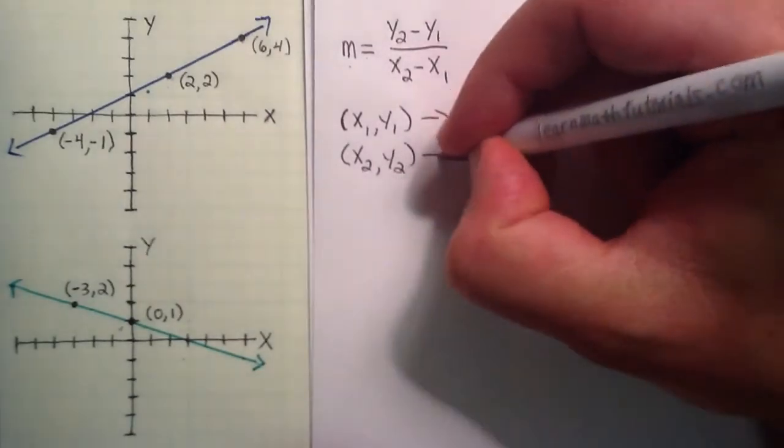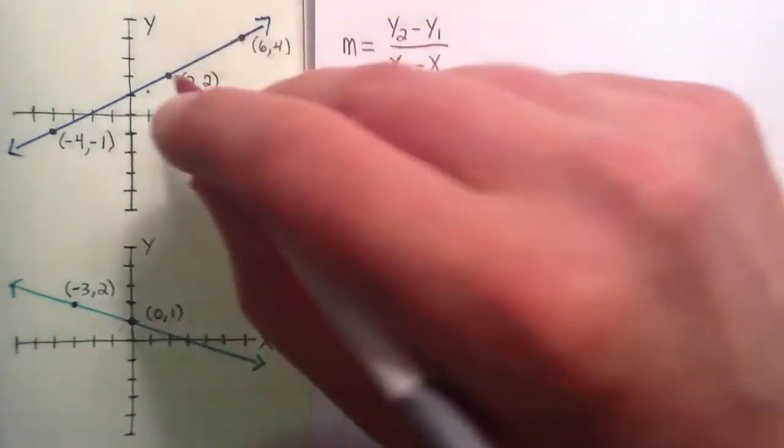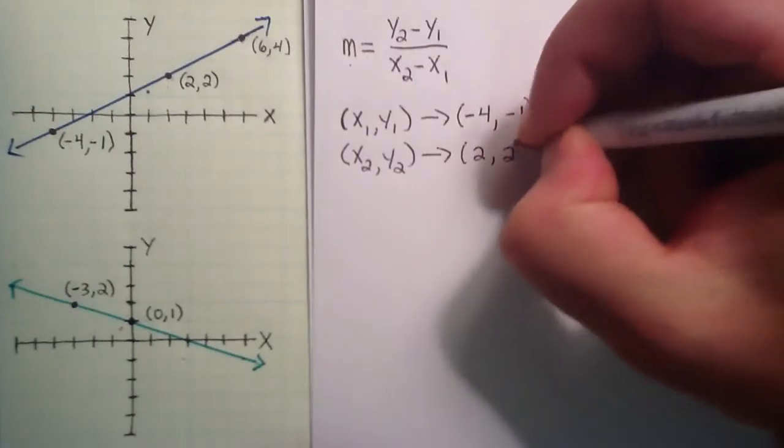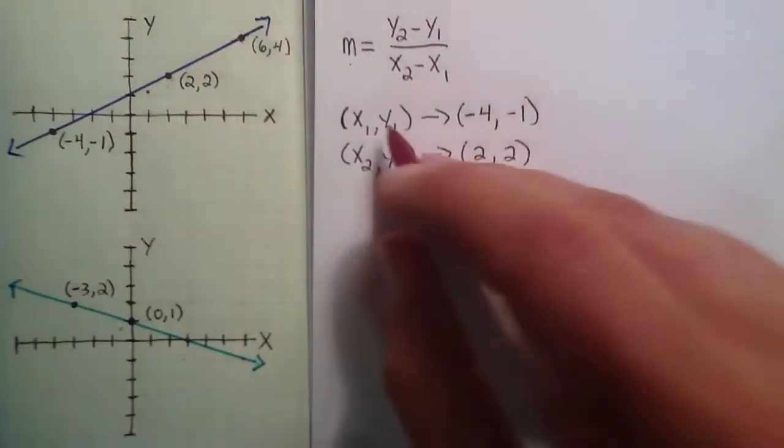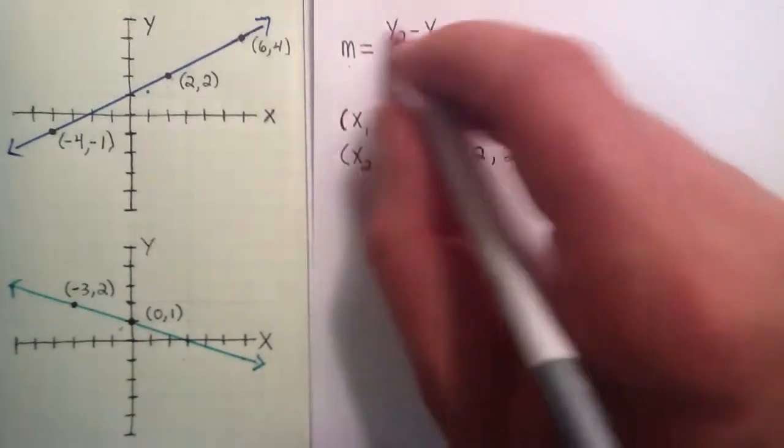And for x2, y2, we can also choose any other point on the line. So let's just choose the point 2, 2. So now that we've labeled our two points, we go ahead and plug it in to our equation for a slope.